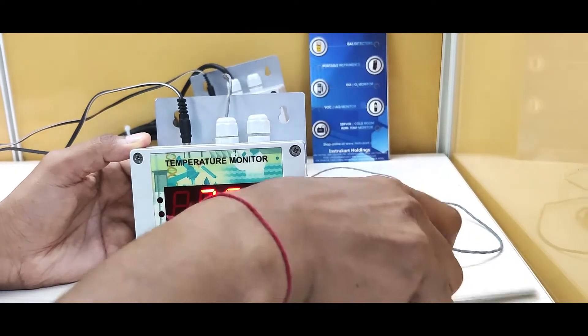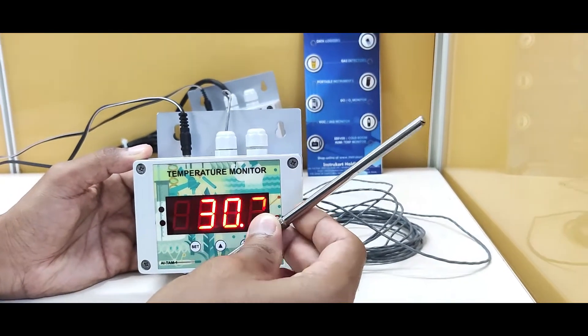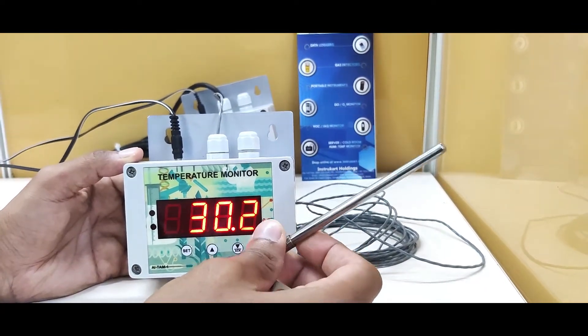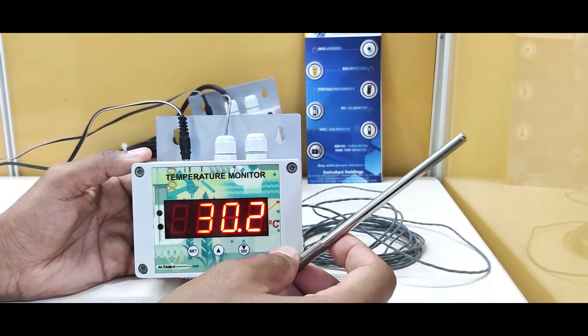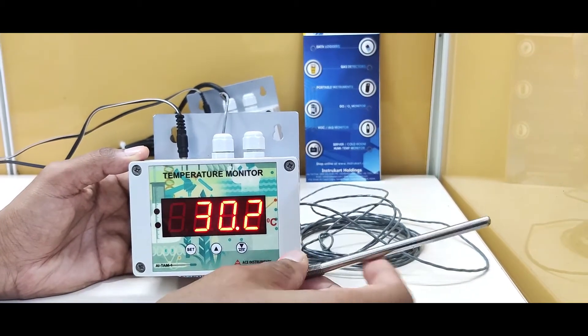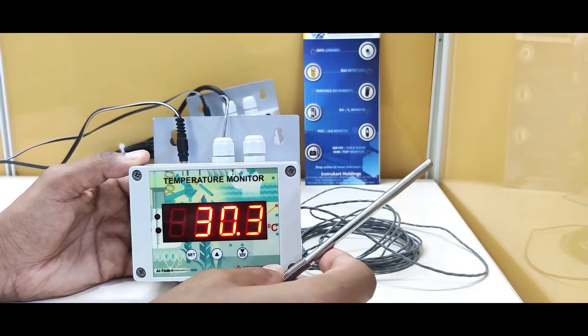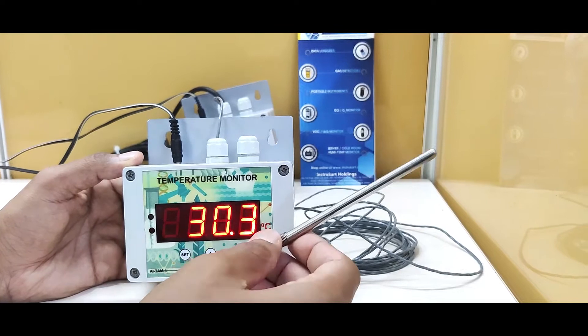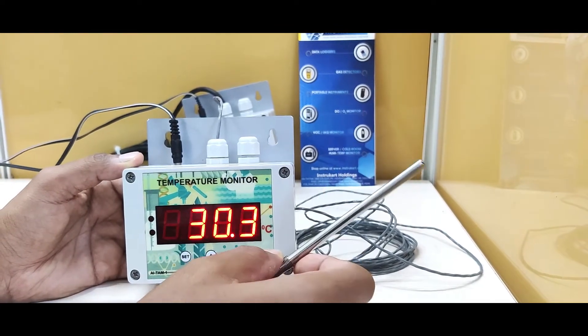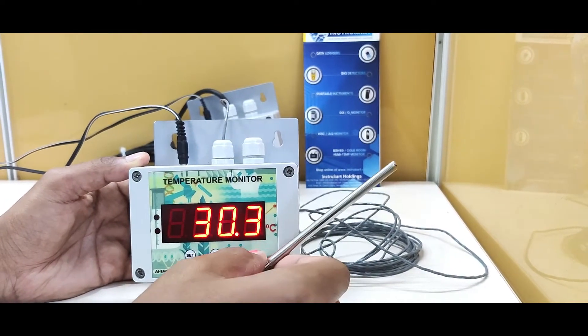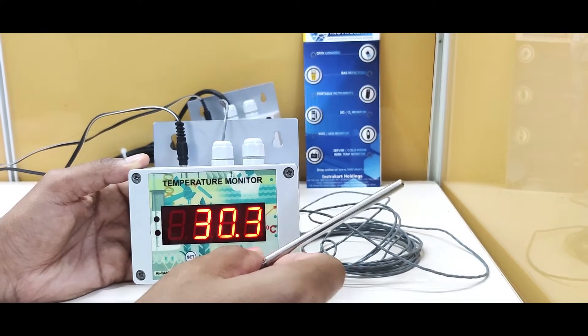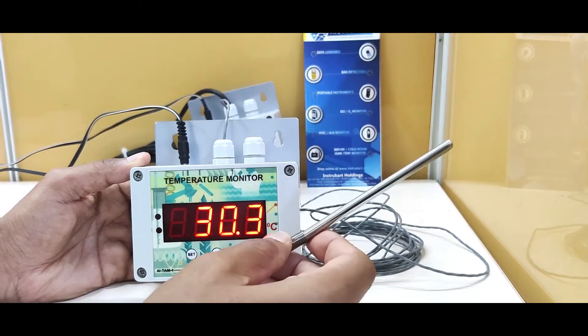This particular sensor, the RTD-PT100, has the capability of sensing from minus 50 to plus 150 degrees depending on the application. This includes cold chains, cryogenic labs, stockpiles, pharmaceuticals, IT rooms, and many similar applications.